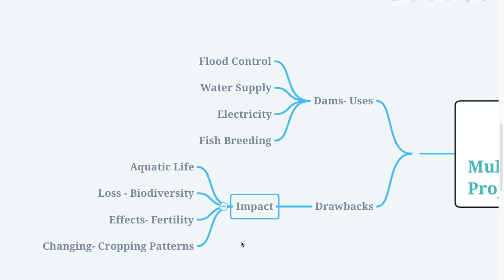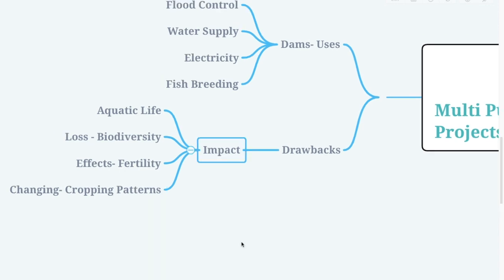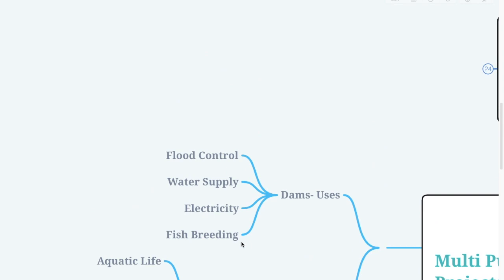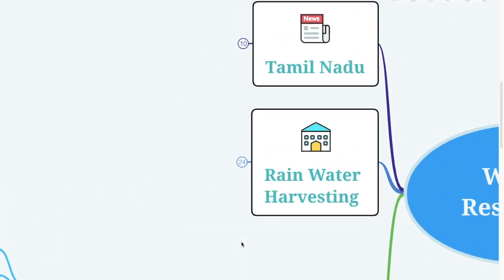Dams also change crop patterns. Multi-purpose projects and large dams have been the cause of many social movements, like the Narmada Bachao Andolan and the Tehri Dam Andolan. It is very important for us to harvest water, so let's talk about rainwater harvesting.